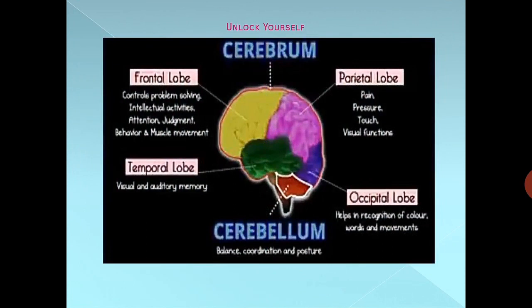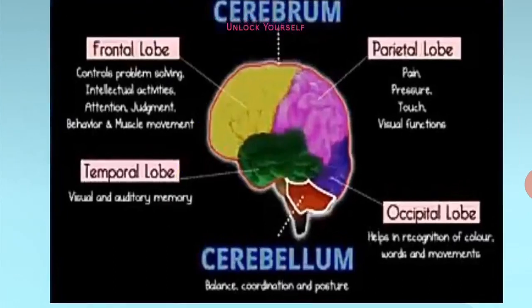Next comes the temporal lobe. This lobe in the left hemisphere houses the primary auditory cortex as well as Wernicke's area, responsible for recognition, perception, and interpretation of auditory stimuli — both environmental sounds and speech. Lesions in this lobe can cause inability to interpret the meaning of auditory stimuli, and when the damage is in the left frontal lobe, pure word deafness can result. The temporal lobe is mainly concerned with visual and auditory memory.